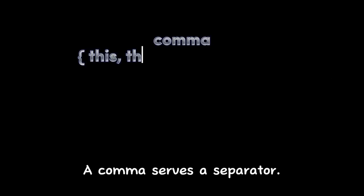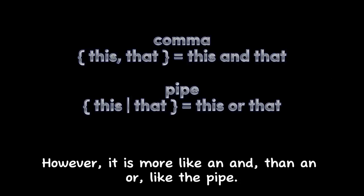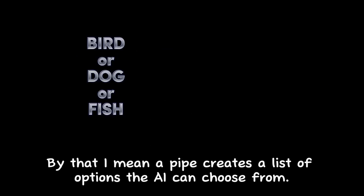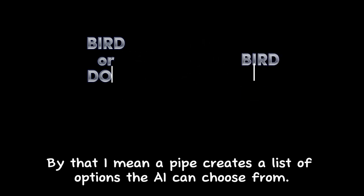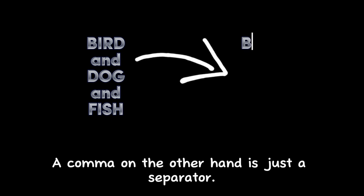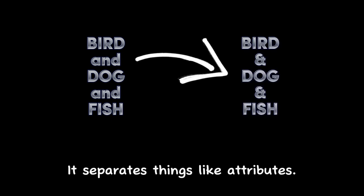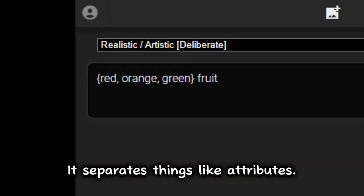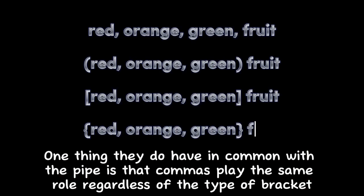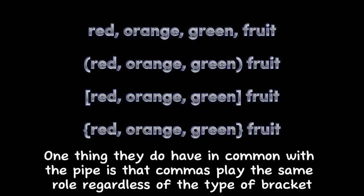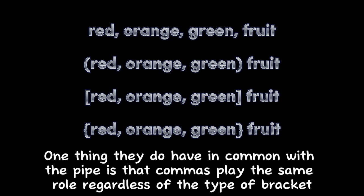Moving on. We have the comma as a delineator within curly brackets. A comma serves as a separator. However, it is more like an AND than an OR, like the pipe. A pipe creates a list of options the AI can choose from. A comma, on the other hand, is just a separator — it separates things like attributes and helps the AI keep things straight. Commas play the same role regardless of the type of bracket they're contained in.